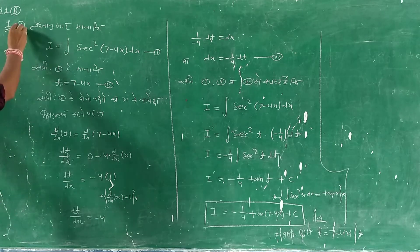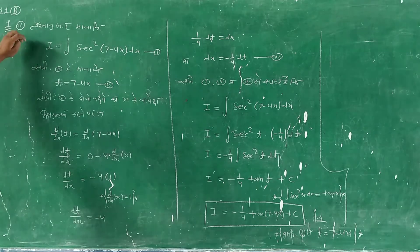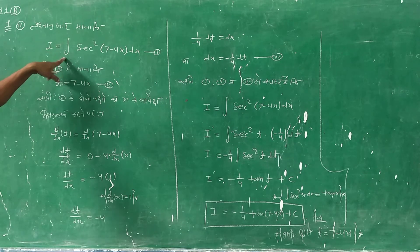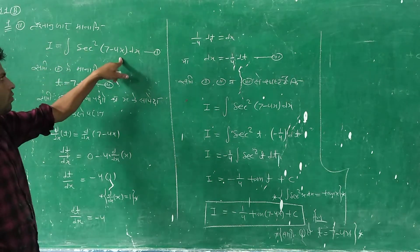I am going to write the question. I equal to integral of z square 7 minus 4x dx.